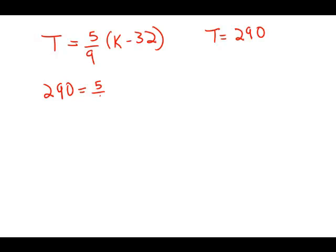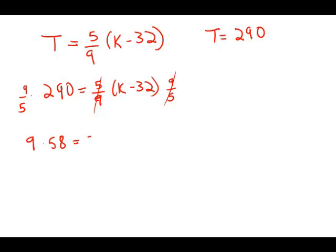So t equals 5 ninths times (k minus 32). The first thing we need to do is isolate k — we need to get rid of that 5 ninths, so I'm going to multiply both sides by 9 over 5. That will cancel the fraction. Now 290 divided by 5 is 58, and 58 times 9 is 522.